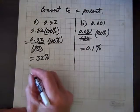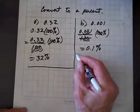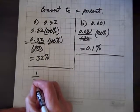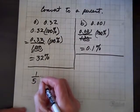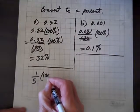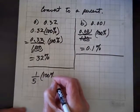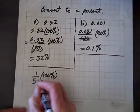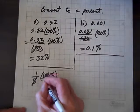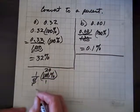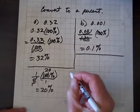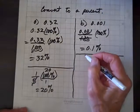Now, what if we have a fraction? What if we have one-fifth? Well, we'll multiply by 1 in the form of 100%, and that's over 1, and 5 goes into 1 20 times, so that equals 20%.